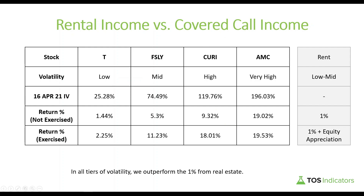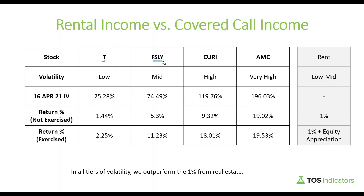I have a table broken down with rental income compared to covered call income. On the left side I have four stocks listed along with their volatility tier, their implied volatility for the April monthly series, and the return percentages based on whether you're exercised or not exercised for the at-the-money call option. On the right side is our baseline for rent using real estate: the one percent return from cash flow, and then adding equity appreciation — which in my mind is equivalent to calculating a return where the call gets exercised.